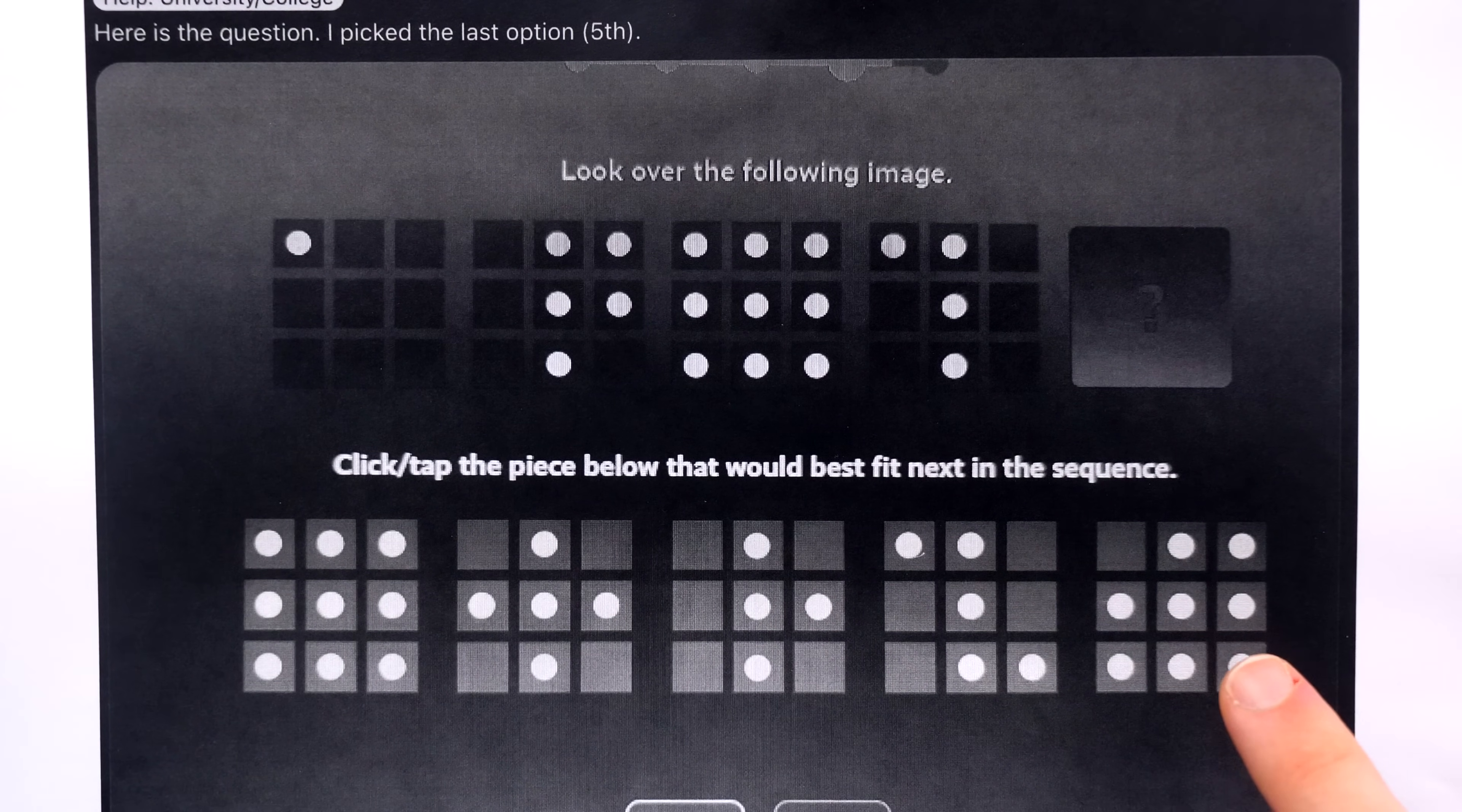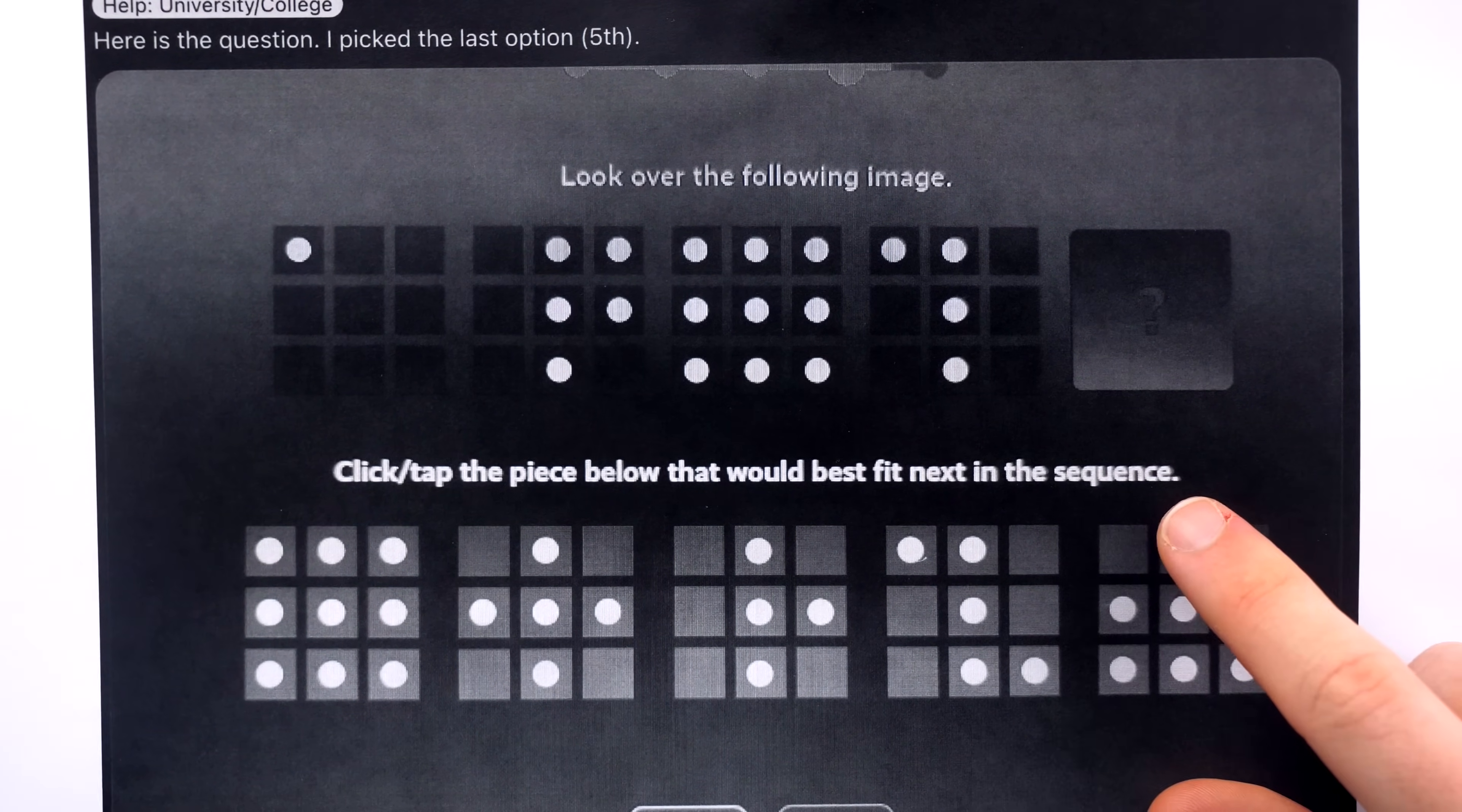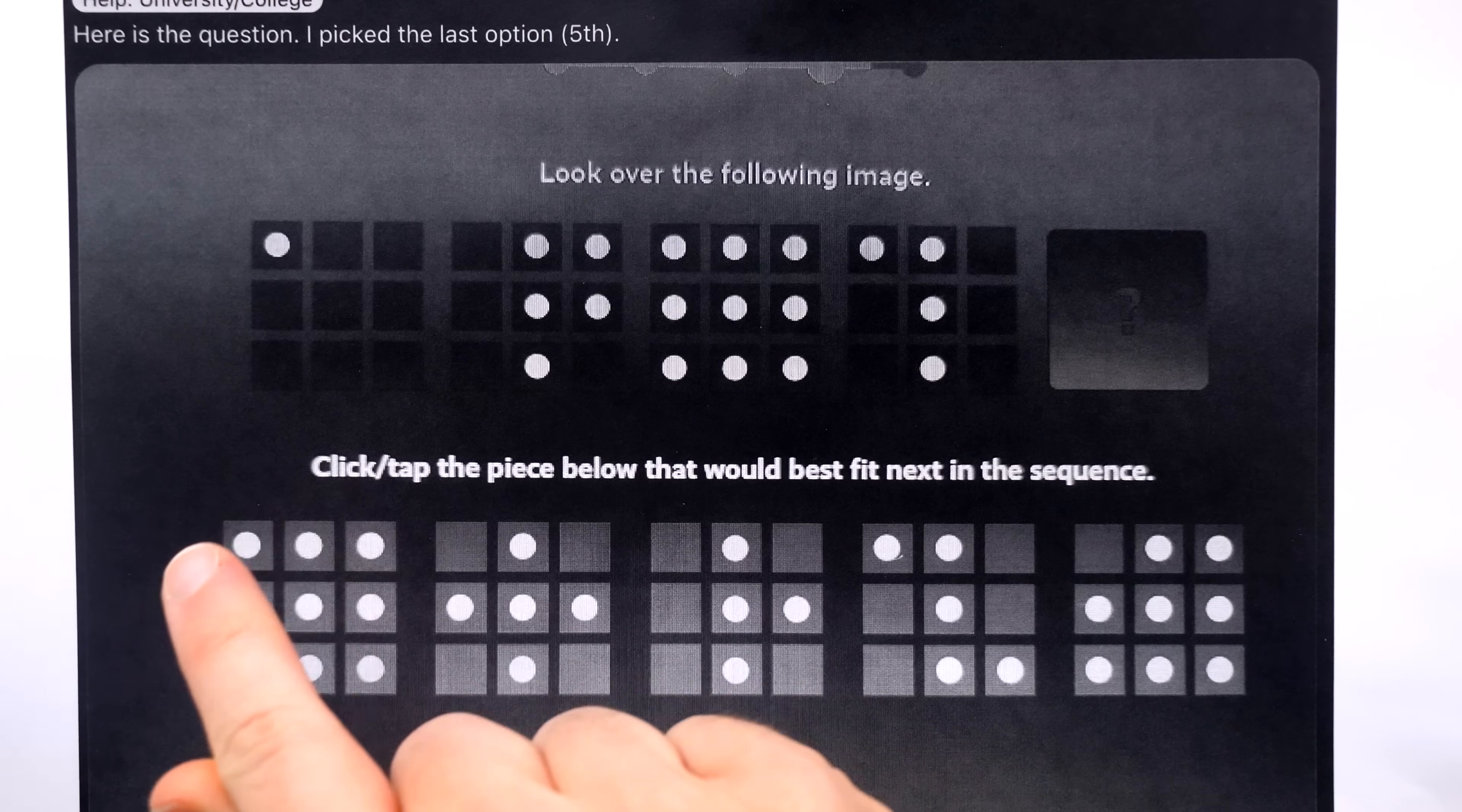Now, the only option available that fits that rule is option 1. For example, in option 2, column 1 does have a dot, but that dot has an empty box above it. In option 5, for example, column 1 has a dot, but that dot has an empty box above it. That breaks the pattern we see in the provided sequence, where no dot has an empty box above it, thus supporting option 1 as the correct answer.